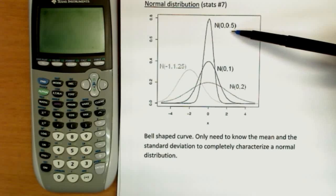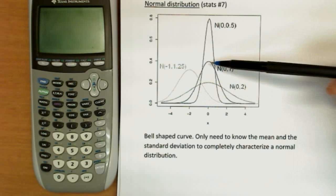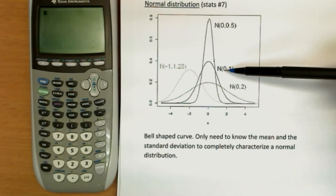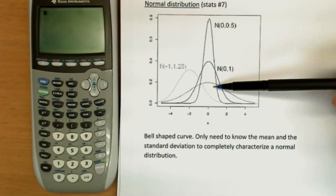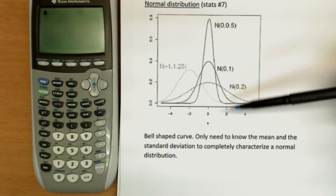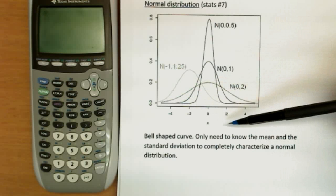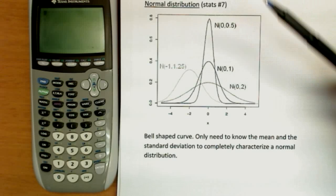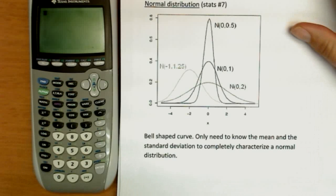This one has a standard deviation of 0.5. So the data are not as spread from the mean as this one. It is also centered at 0, but has a standard deviation of 1. So you see the data is spread a little further out. Changing the standard deviation would change the spread. Changing the mean will change the center, where the thing is actually centered. And all you need is those two numbers to completely characterize it.